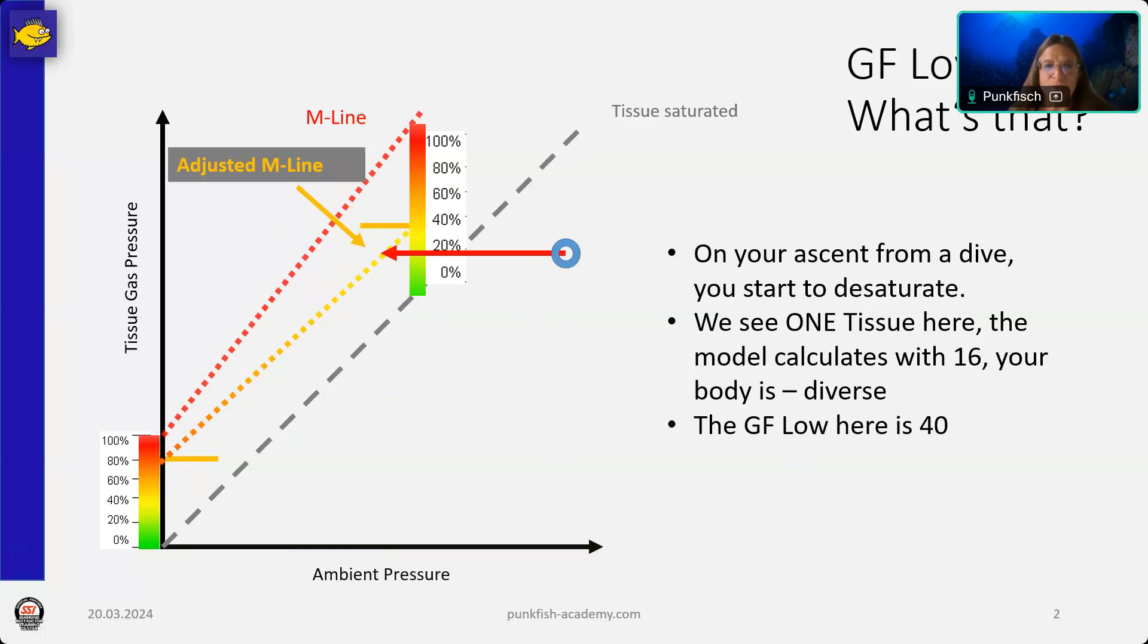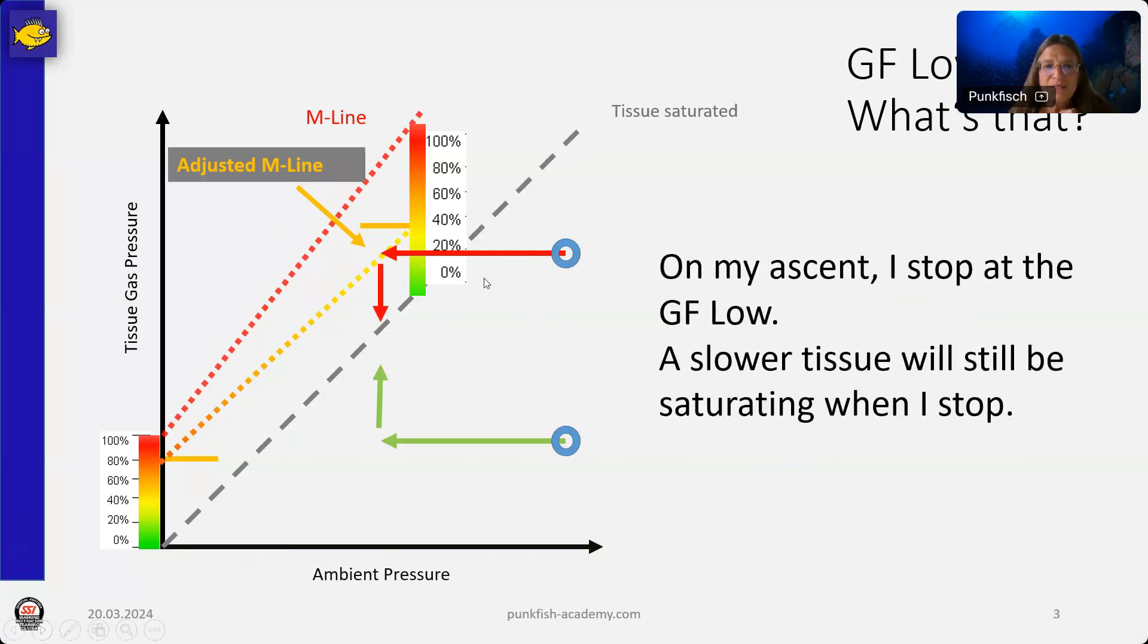Now, this looks smart and nice and easy. We'll just stay under this line and everything is fine. But what we see here is only one tissue. The model calculates with 16 tissues and our body is like a source of infinite tissues. It's not really that easy to calculate. It's more than one tissue and there are more things going on. So, when we have 16 tissues, what happens while we desaturate one of them?